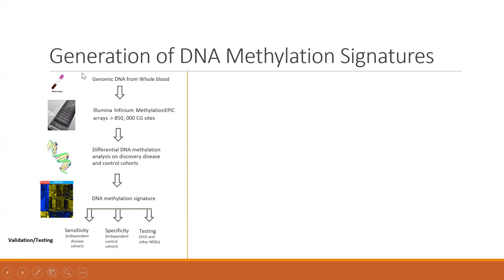Methylation signatures are developed starting with genomic DNA from whole blood. After bisulfite conversion, samples are run on the Illumina EPIC array, which simultaneously assesses 850,000 CpG dinucleotides per sample, with eight samples per chip. There is also substantial prior data from the 450K array, which has half the sites, but all 450K sites are included in the EPIC array, enabling comparison between the two platforms.